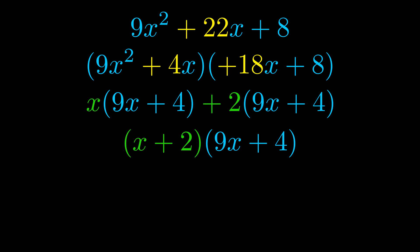Those blue values will become one of our factors and we will combine the two green values, the GCFs that we pulled out, to get the other one. And that is our fully factored equation.